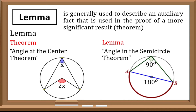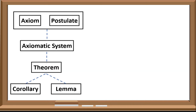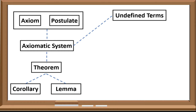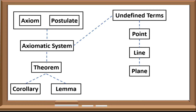This is the axiomatic structure, where all are rooted from the axioms and postulates. Before this axiomatic system is created, there are building blocks that we need to know. These are also known as the building blocks of geometry. They are the undefined terms, which consist of point, line, and plane.